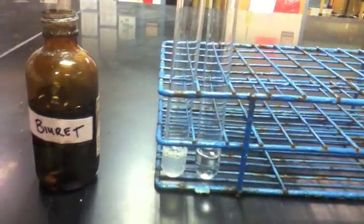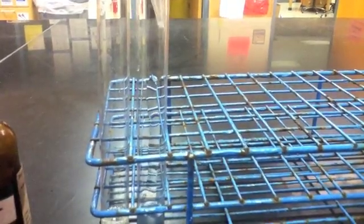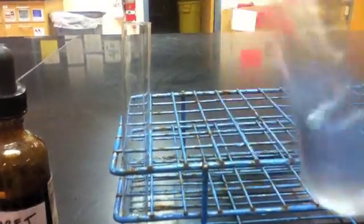Here I take biuret, which has a lightish blue color normally, and add it to the negative control. Notice that the negative control retains a very, very faint bluish color.